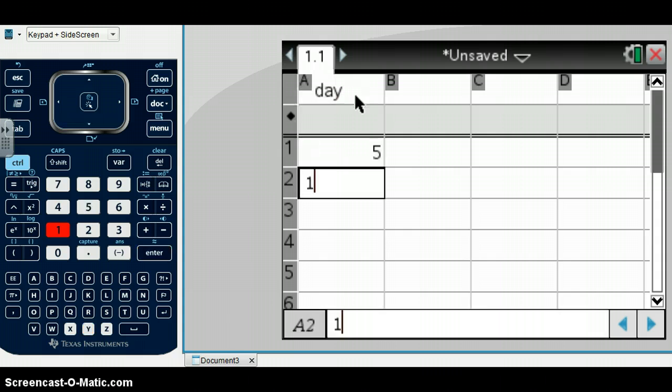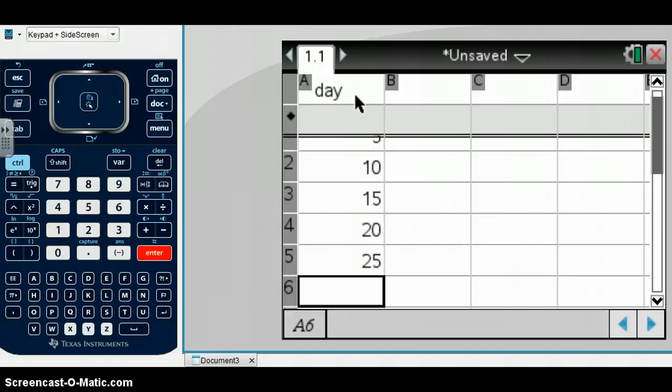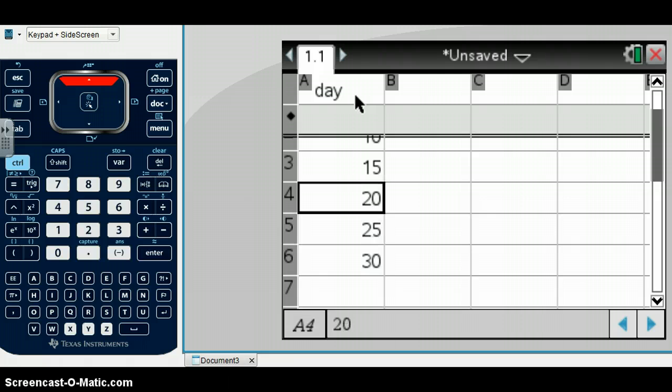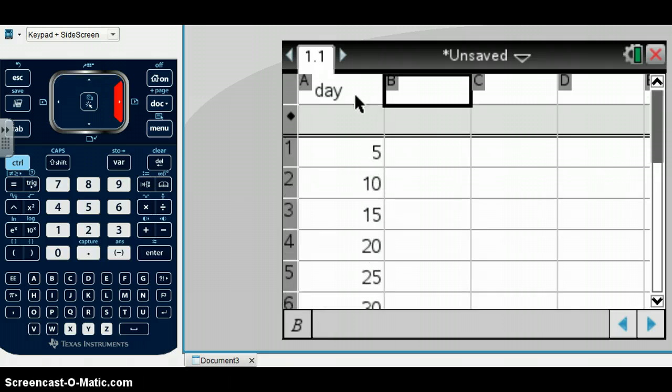so we're going to put that in: 5, 10, 15, 20, 25, and 30. And in the second column, we're going to type in the population. So I'm going to call that column population, and I'm going to type those numbers in,